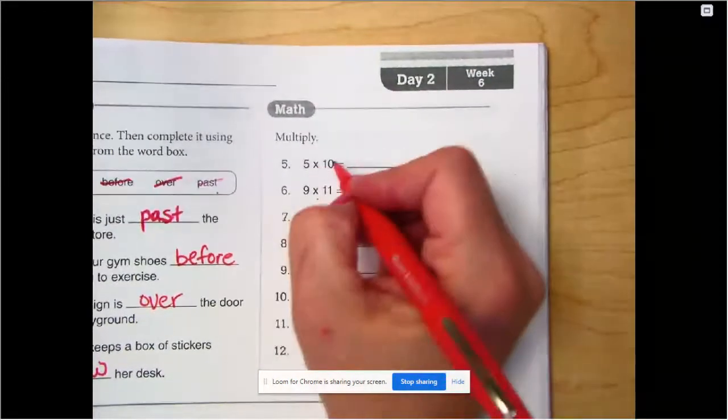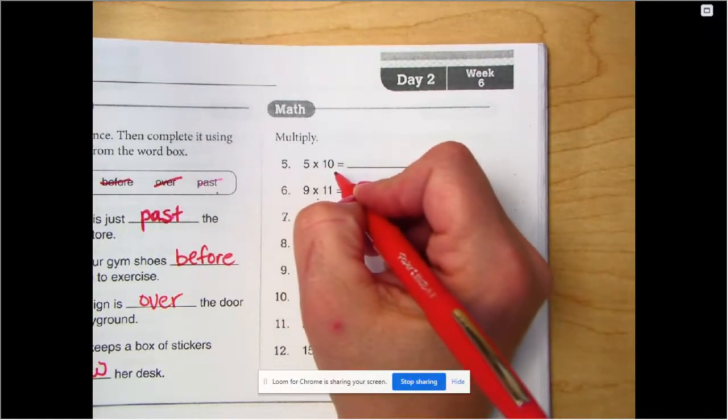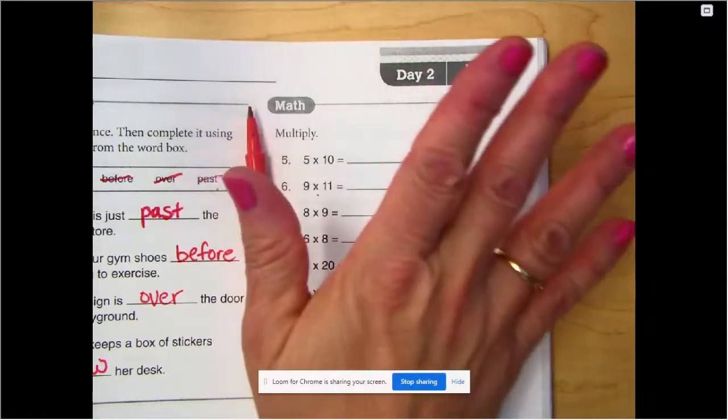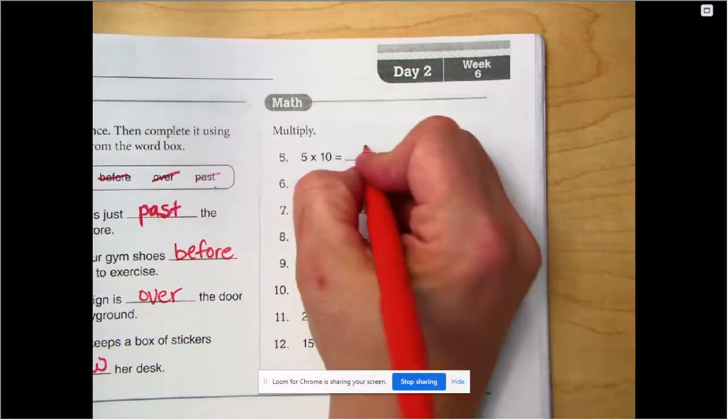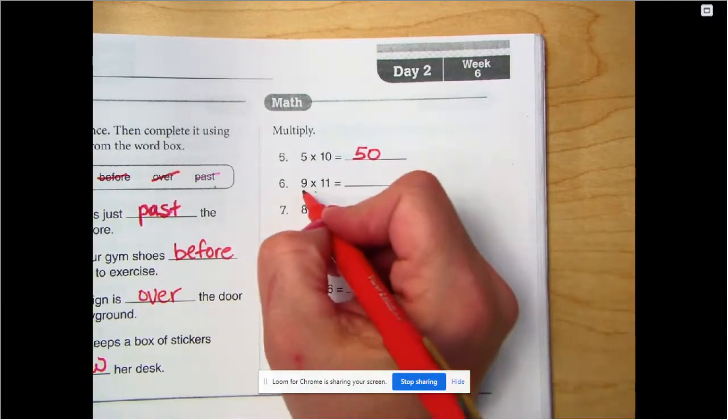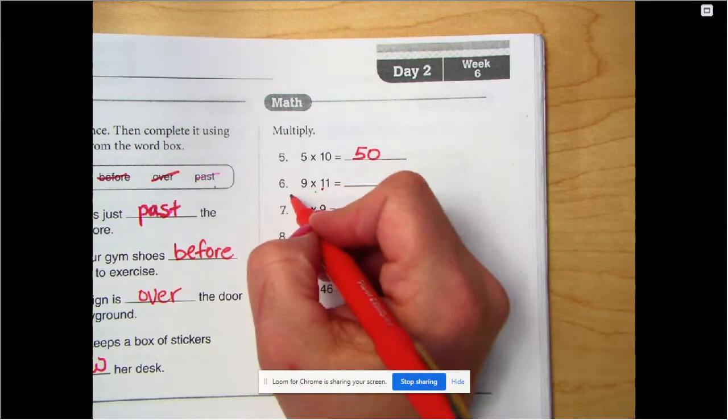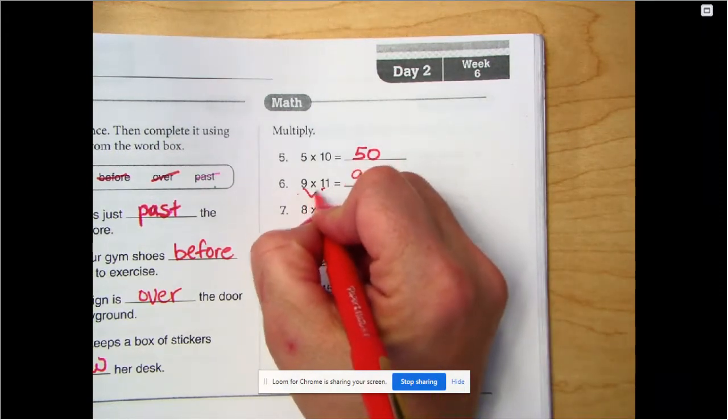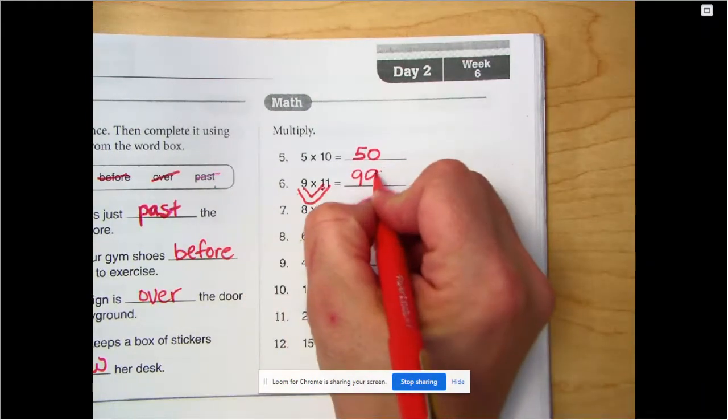So let's go to our multiplication. Five groups of 10, we would count by 10s five times. So 10, 20, 30, 40, 50. We're going to write 50. Nine times 11. Anytime 9 is times 1, it's that number. So 9 times that one and 9 times the second one, 99.